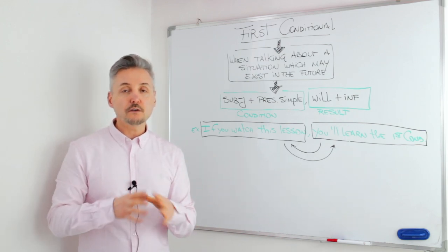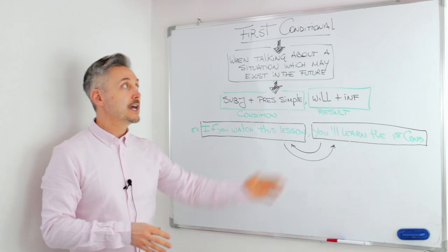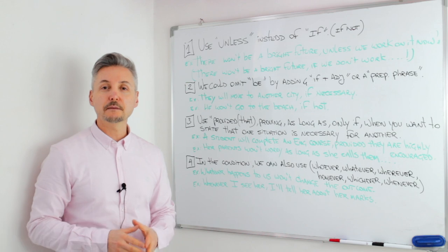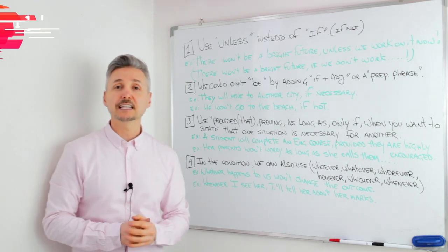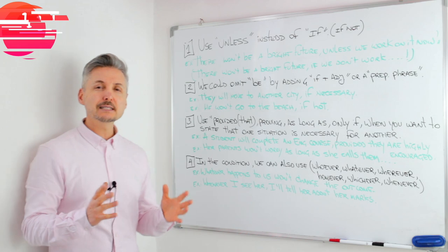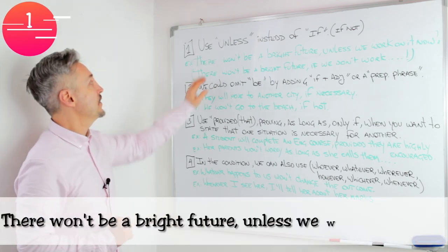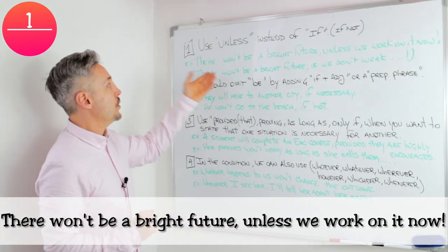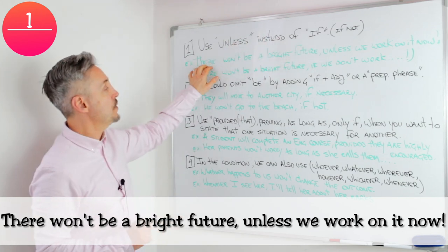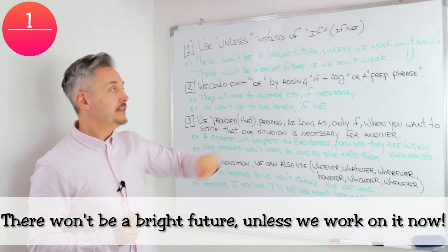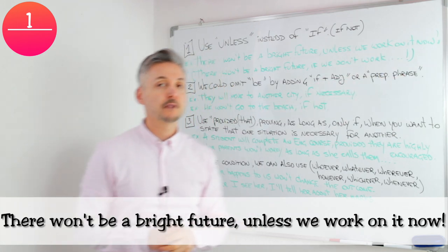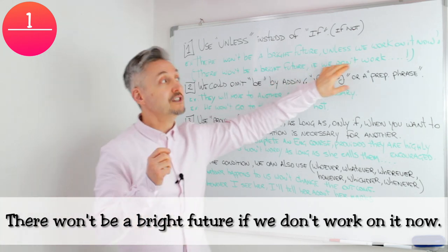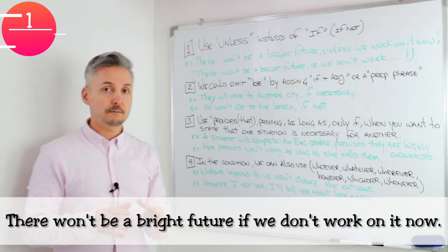I have listed four tips for you to follow to better understand the first conditional. The first tip is to use 'unless' instead of 'if.' Unless means 'if not.' The example was: there won't be a bright future unless we work on it now. We have the result — 'there won't be a bright future' — and the condition — 'unless we work on it now.' I could have said: there won't be a bright future if we don't work on it now. It's the same thing.